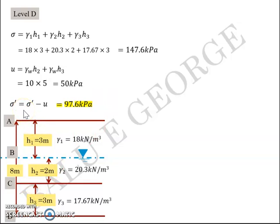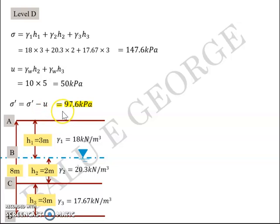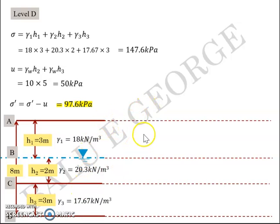Note: there was an editing mistake in the slide — the label shown was sigma (total) rather than sigma dash (effective). To clarify: effective stress σ' = total stress σ minus neutral stress u. The effective stress at level D is 97.6 kPa. We now have all total, neutral, and effective stresses at levels A, B, C, and D.